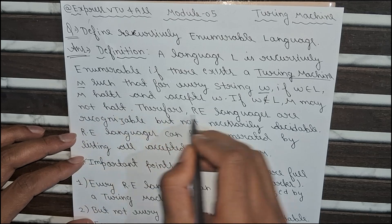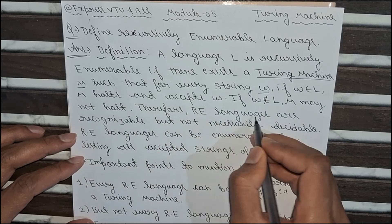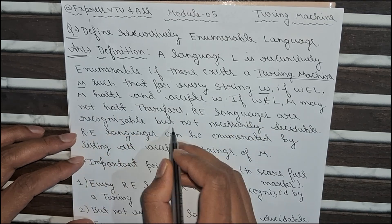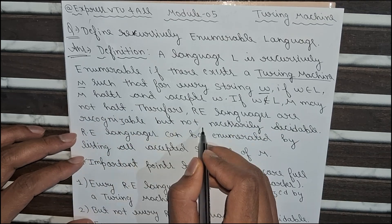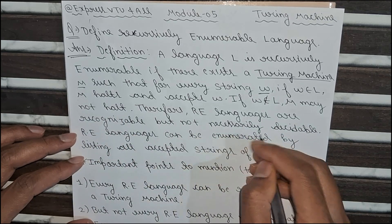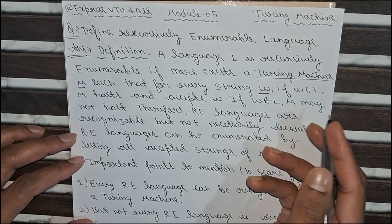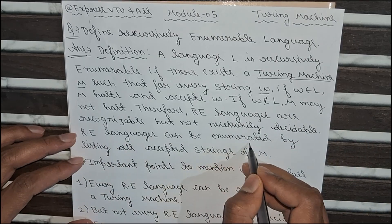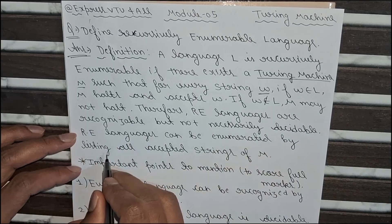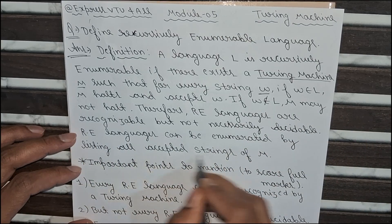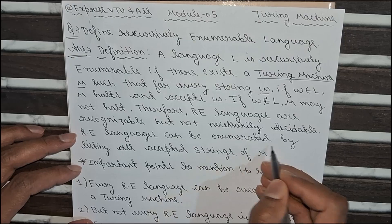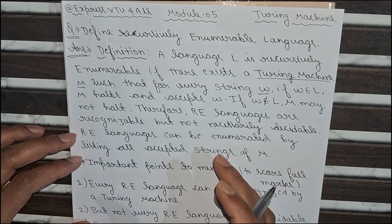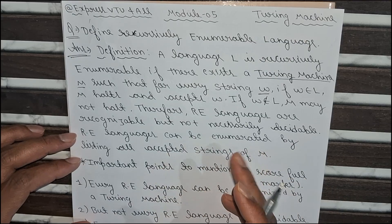Therefore, RE languages are recognizable but not necessarily decidable. RE languages can be enumerated by listing all accepted strings of M.